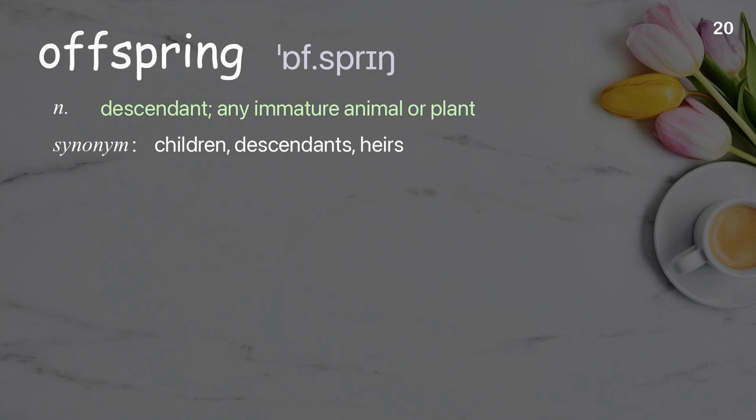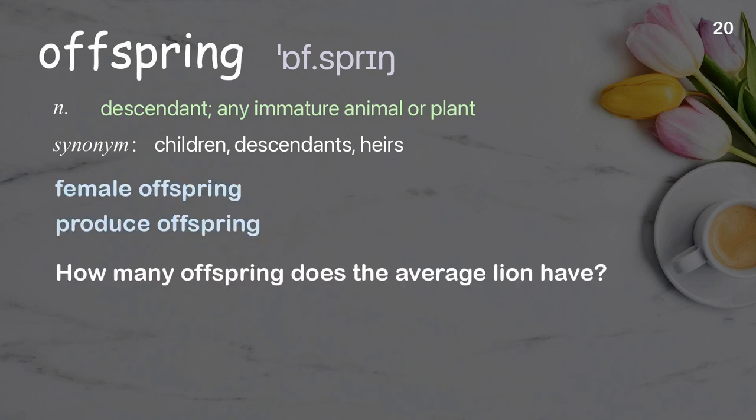Offspring: a descendant; any immature animal or plant. Examples: female offspring, produce offspring. How many offspring does the average lion have?